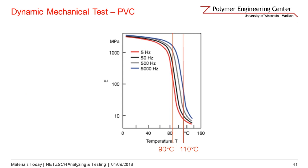Here is a PVC material showing the storage modulus as a function of temperature, measured at 5, 50, 500, and 5000 Hz. At 5 Hz — a very low frequency — the glass transition temperature is 90 degrees C. As frequency increases, the glass transition temperature shifts upward. Why? Because the time scale becomes smaller and smaller, and higher temperatures are needed for the material to respond. This is again the time-temperature superposition principle — and it helps you understand what process temperatures you need for certain processing speeds.